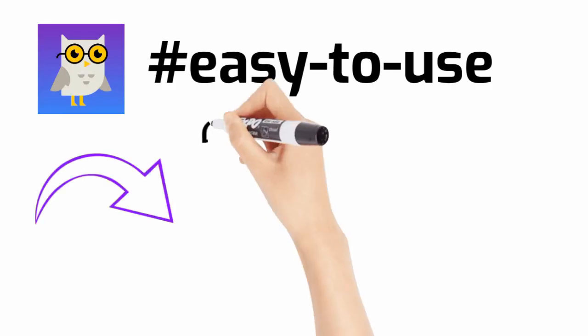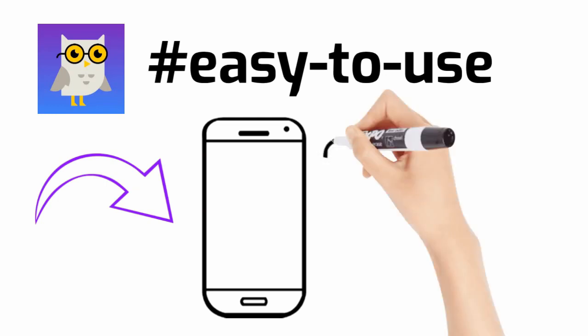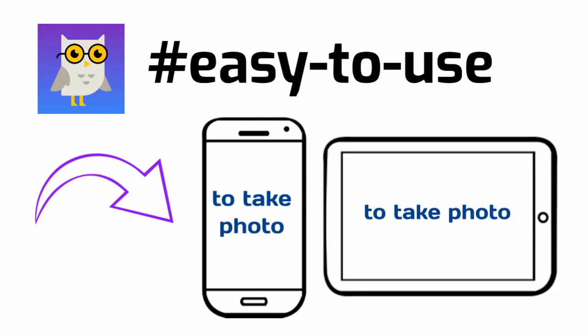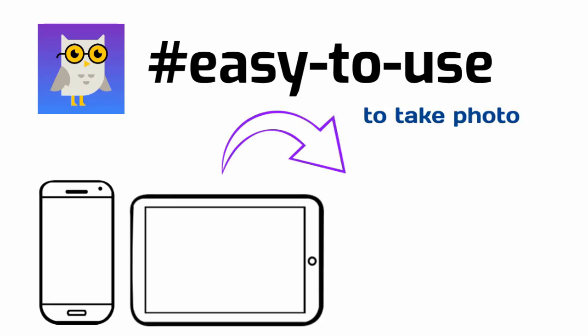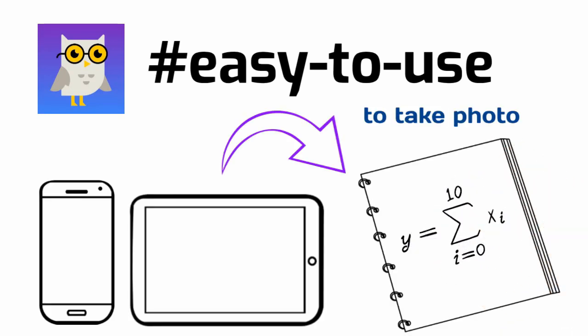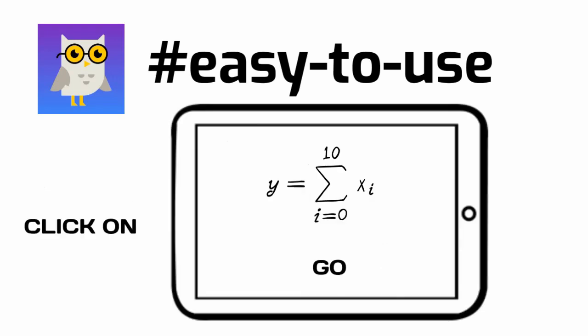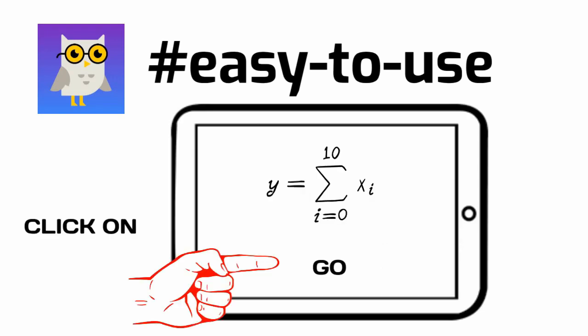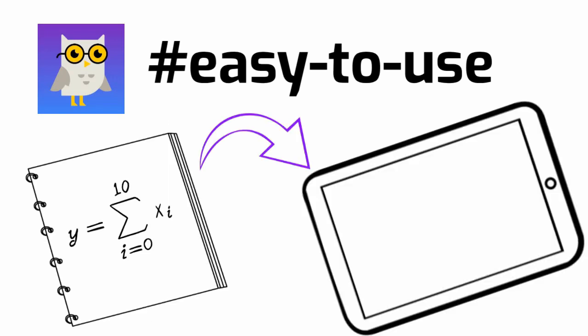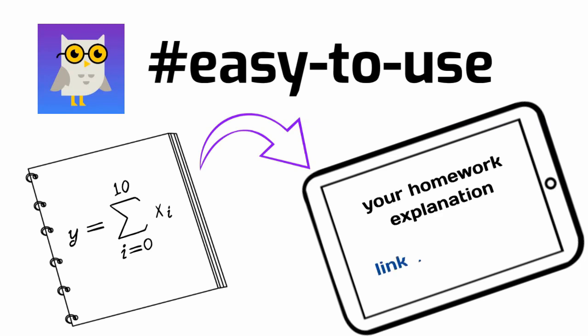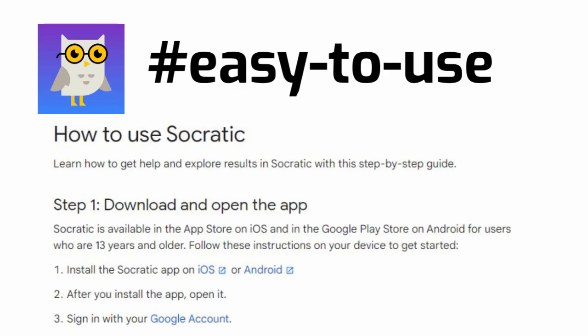Socratic by Google. What do you need? You need a phone or tablet to take a photo, because you should take a photo of your homework. Really easy. After that, click on go and you have your homework explanation and a link to the explanation. If you still don't know, you are able to use the manual. Easy to use. Three points.